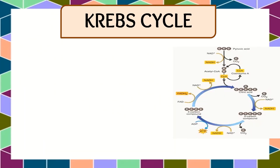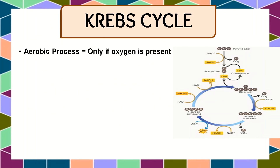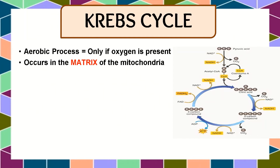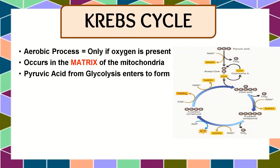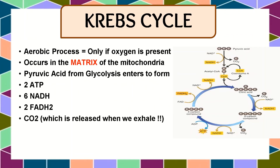What is the Krebs cycle? The Krebs cycle is an aerobic process, meaning it only happens if there is oxygen present. It occurs in the matrix of the mitochondria, which is the liquid part on the inside. The pyruvic acid from glycolysis enters to form 2 ATP, which is the energy; 6 NADH, an electron carrier; 2 FADH2, another electron carrier; and carbon dioxide, which is released when we exhale. It is also called the citric acid cycle.